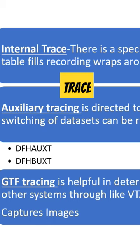The first one is the internal trace. Every CICS region always has an internal trace, and this internal trace table is used as the buffer for other trace destinations.